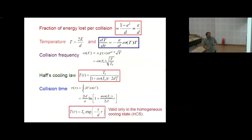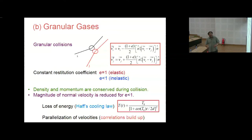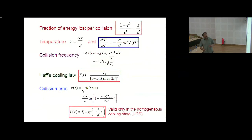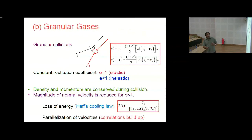This loss of kinetic energy is encapsulated by the Haff cooling law, which states that the temperature goes with time as T raised to the power minus 2. Here's the derivation — it's very straightforward. You consider two particles colliding, find the initial and final energy, subtract them, get the change of energy, and average over all directions of collision. The only assumption is that the system is homogeneous. It's easy to find that the fraction of energy lost per collision is one minus e squared — so epsilon equals one minus e squared — and d is the dimensionality.